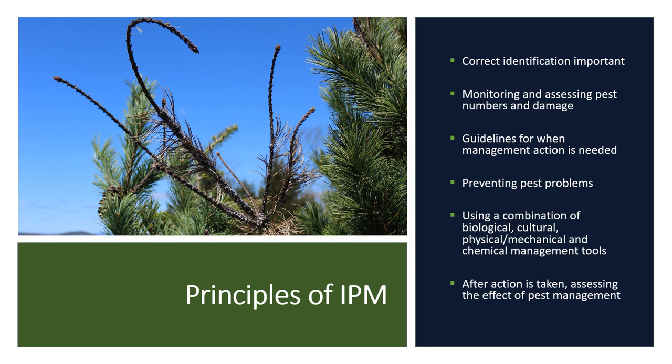Determining if a pest is approaching or at a stage of potential danger to the crop is also important. Preventing pest pressures from the start will be very important as well — making sure your trees are at their best, with low weed pressure, properly fertilized, and most importantly, planted in the right place. If management is needed, use a combination of biological, cultural, physical, mechanical, and chemical methods to manage them. And finally, after an action has been taken, assess what worked and what didn't.